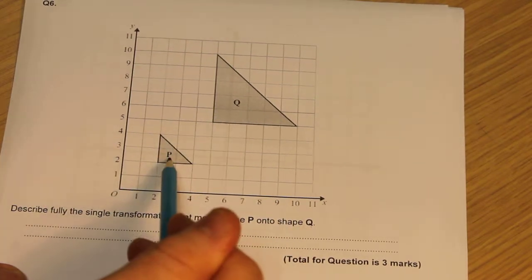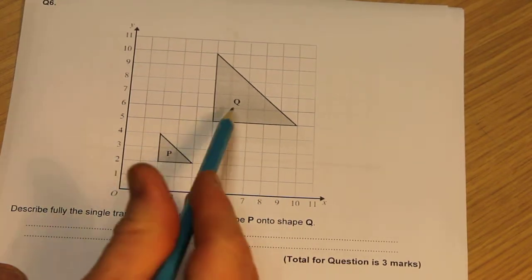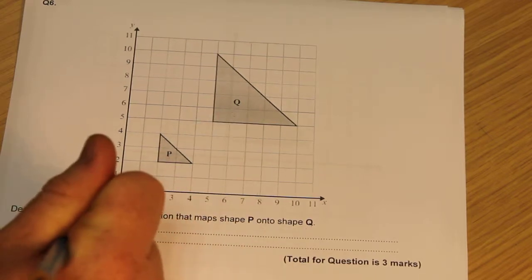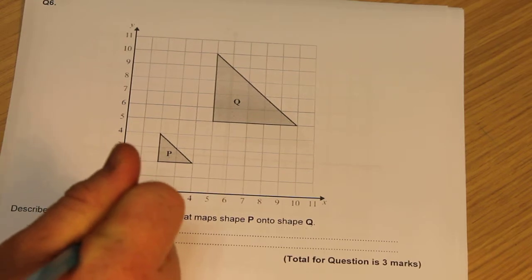P to Q means I'm going from small to big. I'm making it bigger, so I think this is an enlargement. The first thing I'm going to write down is it's an enlargement.